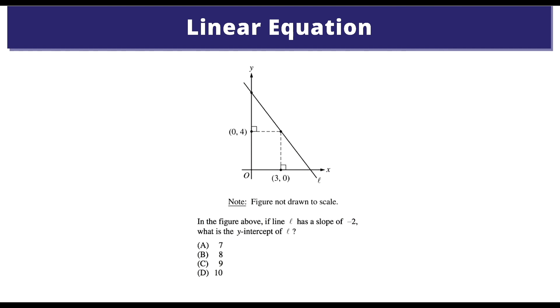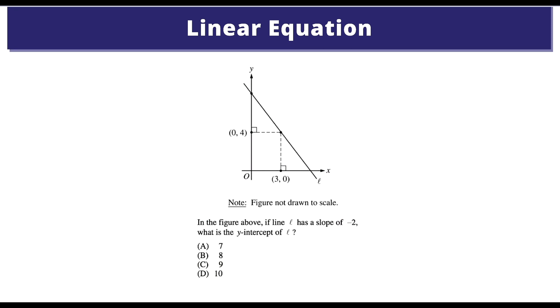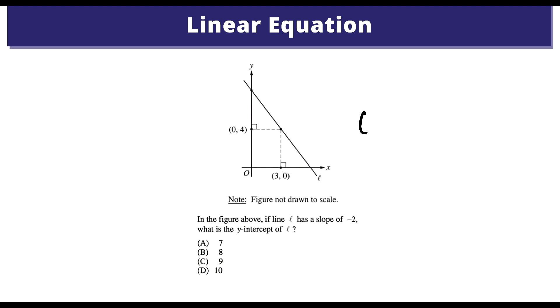Fifth problem. Let's do it. Final one. In the figure above, the line has a slope of negative 2. What is the y-intercept of L? Okay, let's do it. So we have the slope, which is negative 2. And we have one particular point. We have this point being 3, 4.